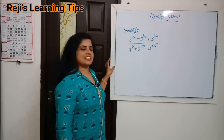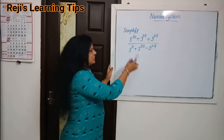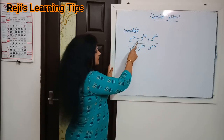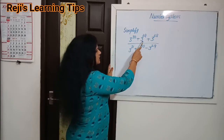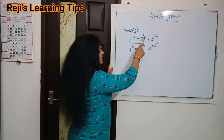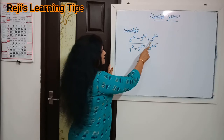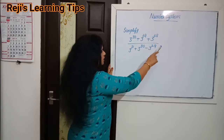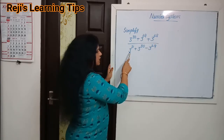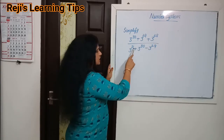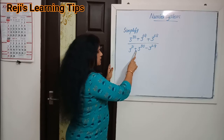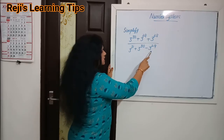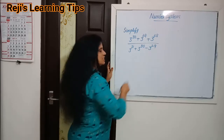Simplify: 3 raise to 30 plus 3 raise to 29 plus 3 raise to 28, divided by 3 raise to 31 plus 3 raise to 30 minus 3 raise to 29.